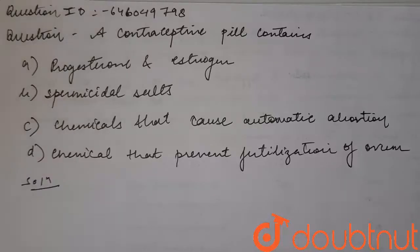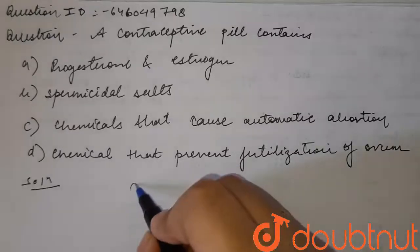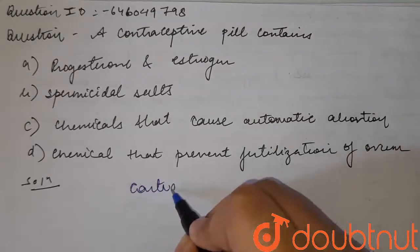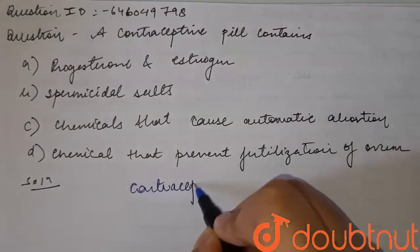Hello students. We have a question: a contraceptive pill contains — option A: progesterone and estrogen, option B: spermicidal salts, option C: chemicals that cause automatic abortion, and option D: chemicals that prevent fertilization of ovules. So students, let's look at contraceptive pills.